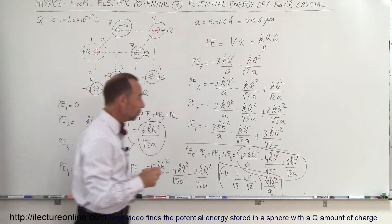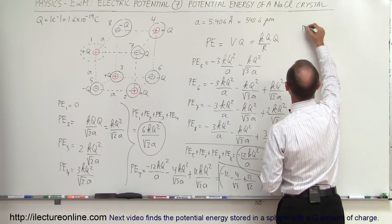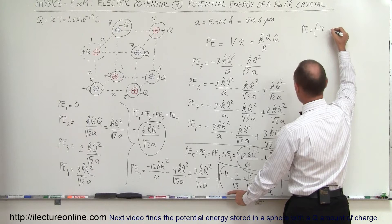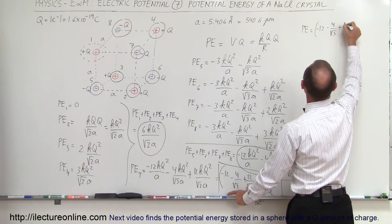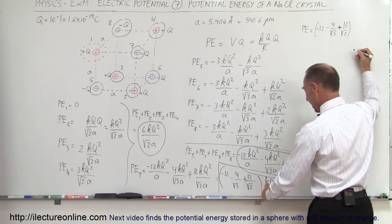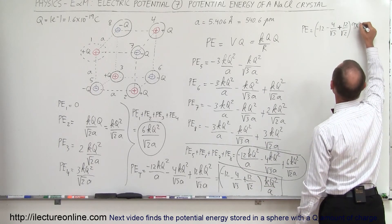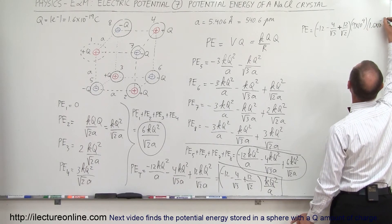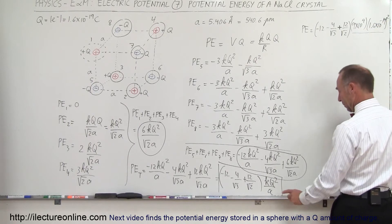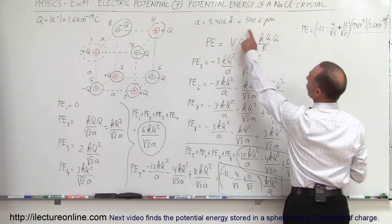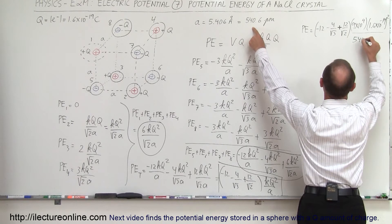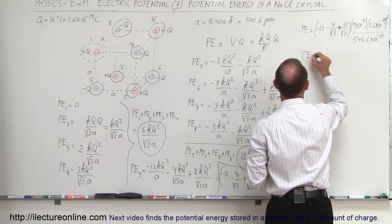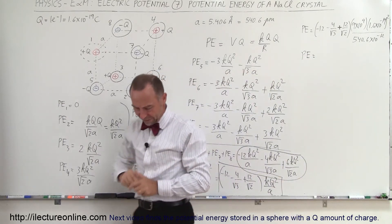If you want to know what that equals, we can calculate it. The potential energy is equal to that quantity: minus 12, minus 4 divided by the square root of 3, plus 12 divided by the square root of 2, times K — which is 9 times 10 to the 9th — times Q squared — which is 1.6 times 10 to the minus 19, squared — divided by the distance A, which is 540.6 picometers, or 540.6 times 10 to the minus 12 meters.